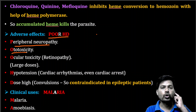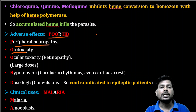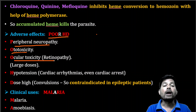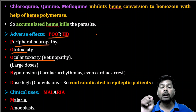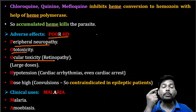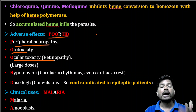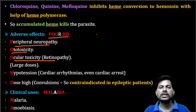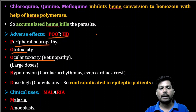Chloroquine also causes ototoxicity — damage to the ear — possibly disturbing the auditory tube as well as vestibular and cochlear function. It also causes ocular toxicity. This is specific to chloroquine: on high doses or long-term use, chloroquine deposits in the eye and causes retinal damage, potentially leading to loss of vision, especially if the optic nerve is damaged.